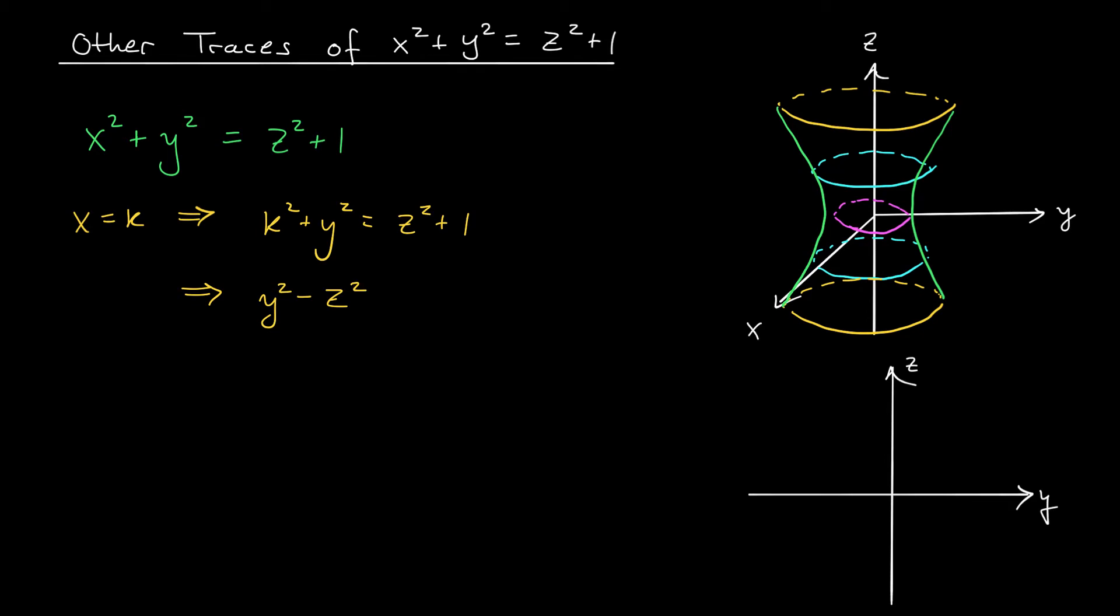So I'll move the z² over to get y² - z². And then I'll move the k² to the right to get 1 - k². Now check it out. The y term has a positive coefficient and the z term has a negative coefficient. This is the equation of a hyperbola.